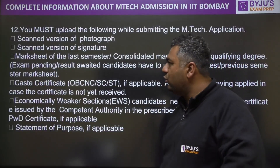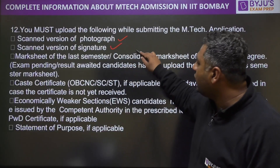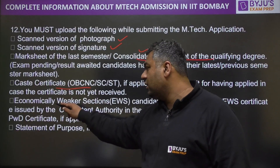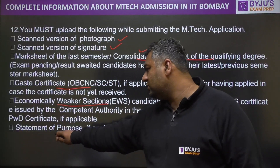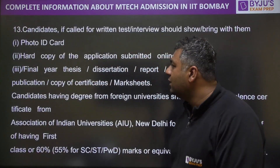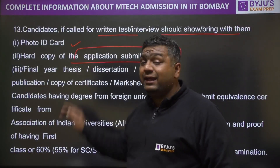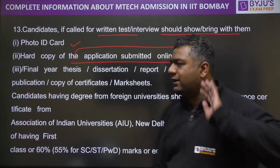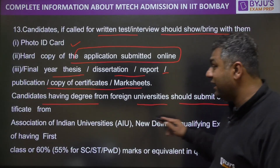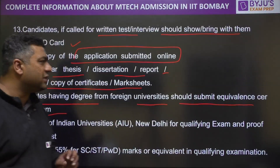Here is the checklist of things you need to upload before applying: a scanned photograph, a scanned signature, mark sheet of the last semester or consolidated mark sheet if you have already completed BTech, caste certificate, EWS certificate, PWD certificate, and a statement of purpose if applicable — that is not required for everyone. You also need a photo ID card for the written test and interview, along with a hard copy of the application submitted online, your final year thesis or dissertation or report, and a copy of certificates. Candidates with a degree from a foreign university must submit an equivalence certificate; relevant recognized societies can provide such certificates.